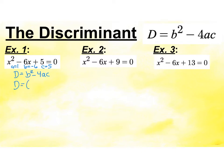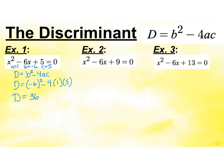So b squared — be careful, use parentheses, especially if you're going to do this on your calculator, because you're plugging it in and then squaring it — minus 4 times a is 1, times c is 5. Remember order of operations; you're going to do your exponent first. So d equals negative 6 times negative 6, which is positive 36. The last term is all multiplication, so 4 times 5 is 20. I get a discriminant of 16.